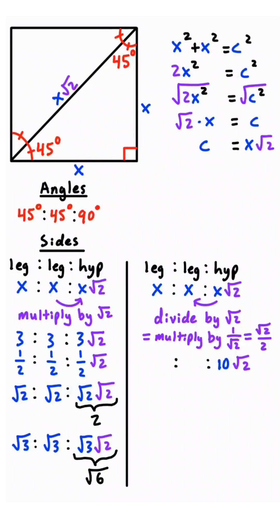Meaning if the hypotenuse is 10 root 2, then if we divide by root 2, then the other leg must be 10 and 10.